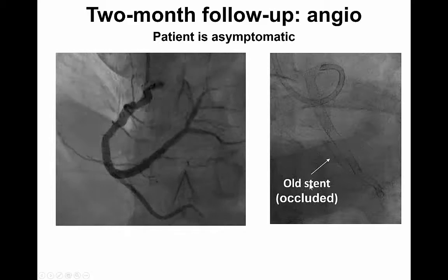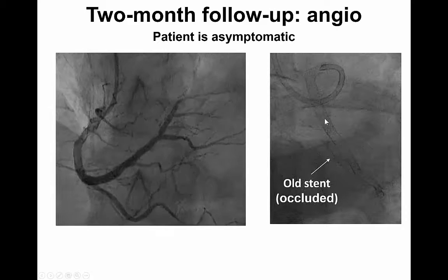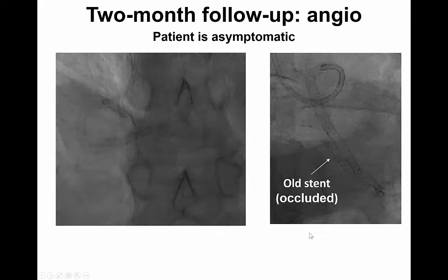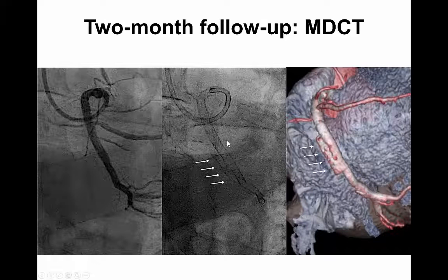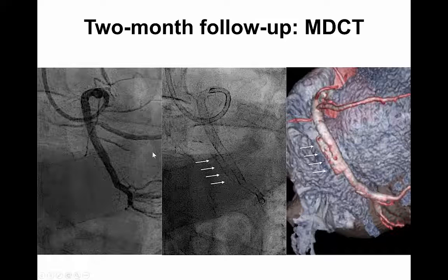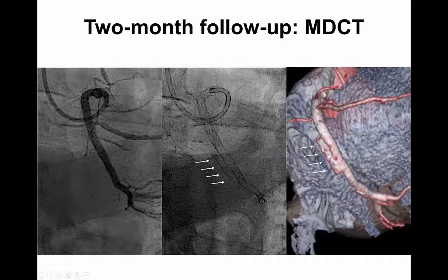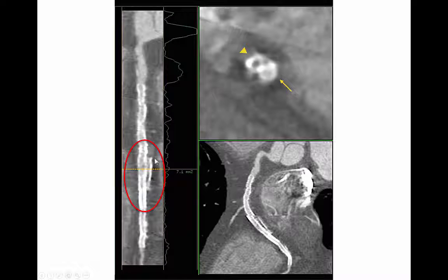You can see here that the result is preserved after two months, and in this caudal shot you can see the old occluded stent parallel to the newly implanted stent in the distal RCA. The patient underwent extensive multimodality imaging with multi-detector CT. In these images you can see how well the occluded stent was excluded from the coronary circulation, and in this curved multiplanar reconstruction you can see the occluded stent indicated by the arrowhead and the newly patent stent indicated by the conventional arrow.